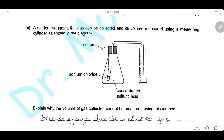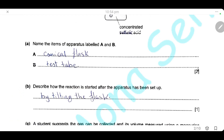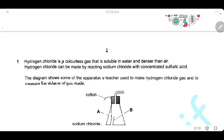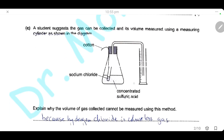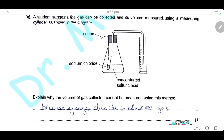A student suggests that the gas collected and the volume can be measured using a measuring cylinder as shown here in the diagram. Explain why the volume of the gas collected cannot be measured using this method. Since hydrogen chloride gas is colorless, the volume of the gas cannot be seen on the scale of the measuring cylinder. So we cannot measure the volume of the gas because hydrogen chloride is a colorless gas.